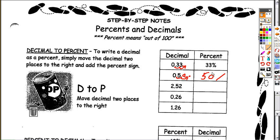Remember that percent means a number out of 100. Can you have more than 100 percent? Sure you can. 2 and 52 hundredths becomes 252 percent.